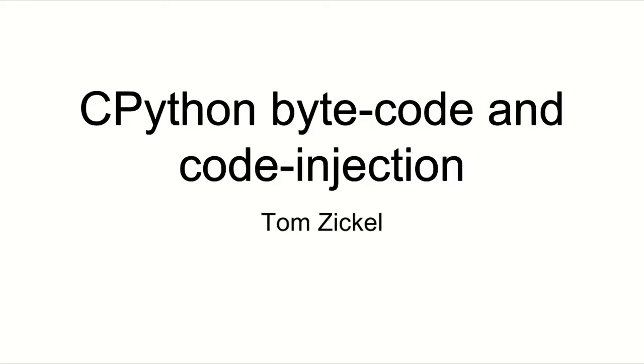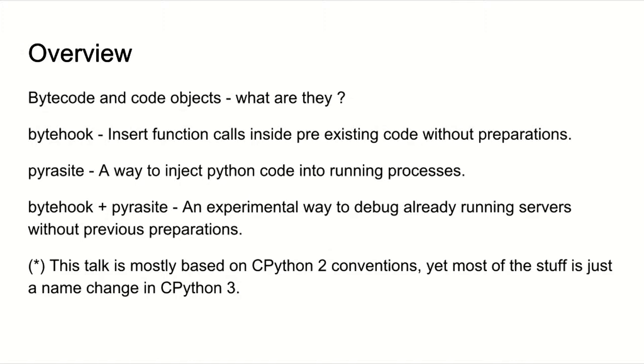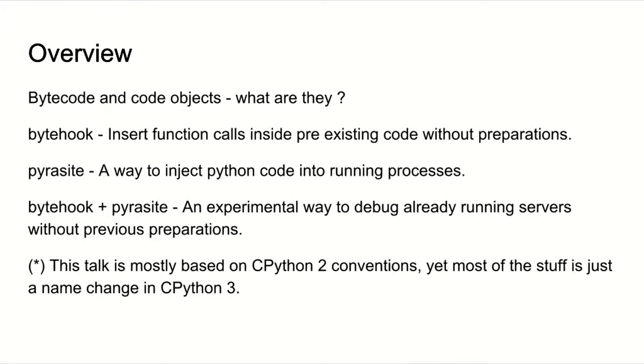Hi everybody. My name is Tom Zikel. Today we're going to talk about CPython bytecode and how to inject code into it. We'll first talk about the bytecode system and code objects, then I'll show a framework I've written called Bytehook, which allows you to insert function calls into pre-existing code without preparations. Then I'll show another project called Pyrocyte, which allows you to inject Python code into running live processes. And then I'll show a combination of both to allow you to debug already running servers without previous preparations.